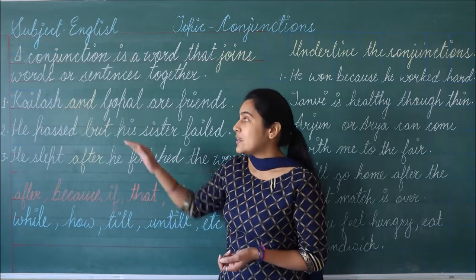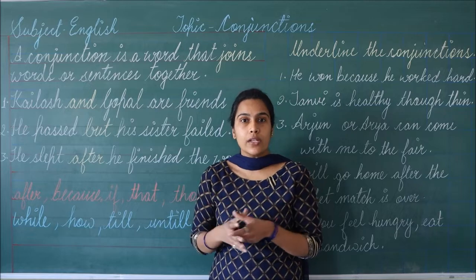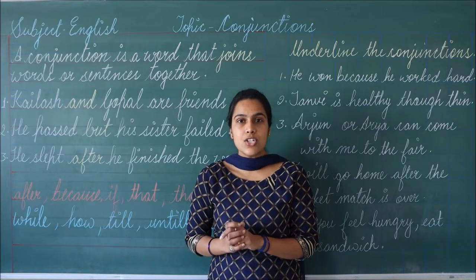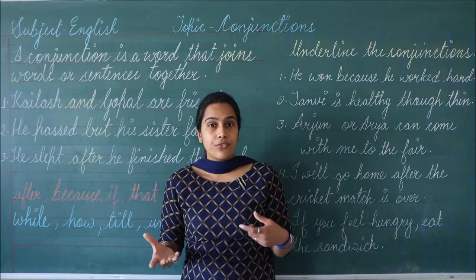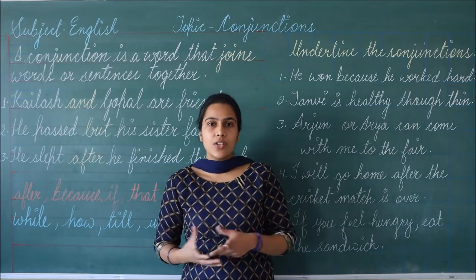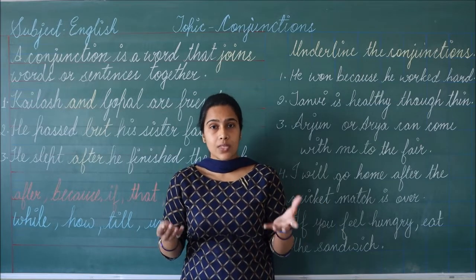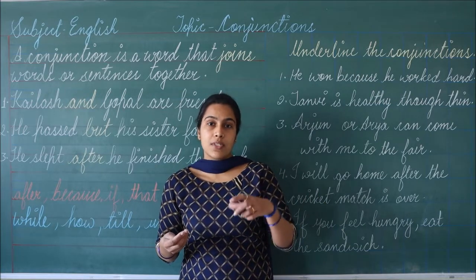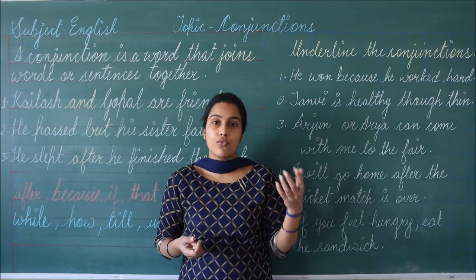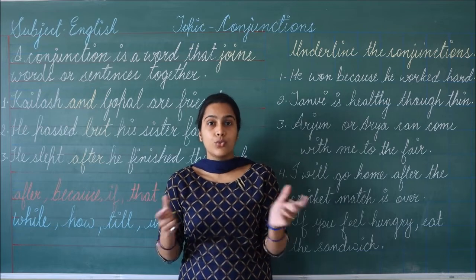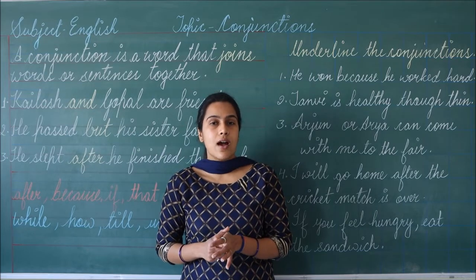तो conjunctions क्या होते हैं? जिन words को हम दो words को, दो sentences को, या दो clauses को join करने के लिए use करते हैं, वो हमारे conjunctions होते हैं. Words like because, though, although, till, if, and, so, etc. — यह जितने भी words होते हैं जिनका हम use करते हैं एक sentence को दूसरे sentence से join करने के लिए, या दो words को join करने के लिए — those words are conjunctions.